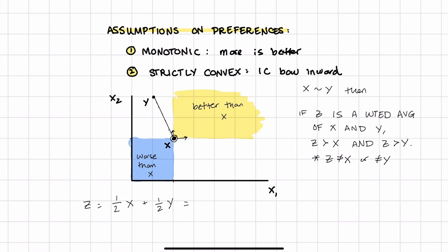X is at 2, 2, Y is at 1, 4. So Z would be half of X, which is 1, 1, plus half of Y, which is 0.5, 2. And so Z is going to be 1.5 and 3. 1.5, 1, 2, 3. Right in the middle of X and Y.